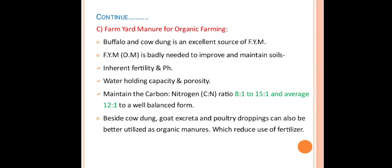The next topic is farmyard manure for organic farming. Buffalo and cow dung is an excellent source of FYM. It provides dung and urine, which is useful for increasing the fertility of the land or farm. FYM, also called organic manure, is badly needed to improve and maintain soil's inherent fertility, pH of the soil, water holding capacity, and porosity of the soil.